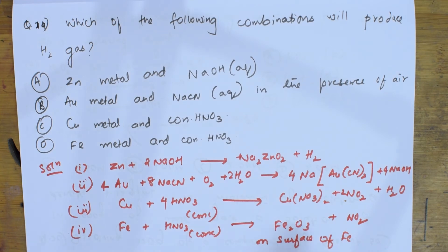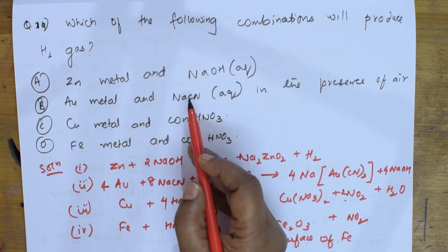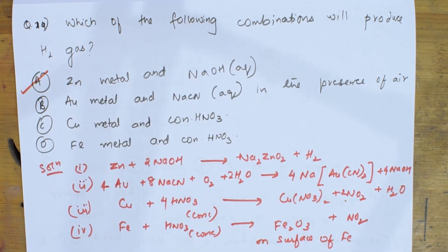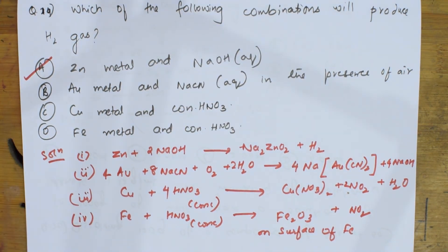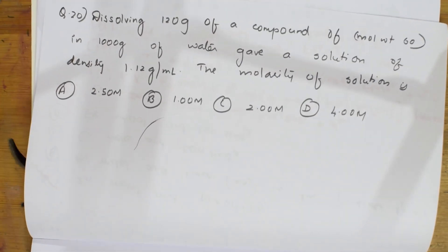So when I see all the options, which reaction produces hydrogen gas? In the first reaction only — zinc plus NaOH — I get evolution of hydrogen gas. So the correct option is A. Please note this reaction, students. Let's come back and do the next question. I'm going very slowly so that your concept is clear.